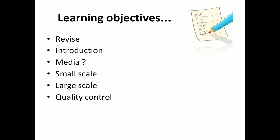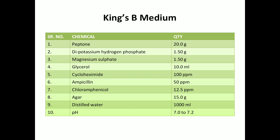We will also cover quality control points and conclusion. Here is the composition of King's B media — it is the selective media used for mass multiplication of Pseudomonas fluorescens. All the details are mentioned including quantity and pH, which is 7.0 to 7.2.